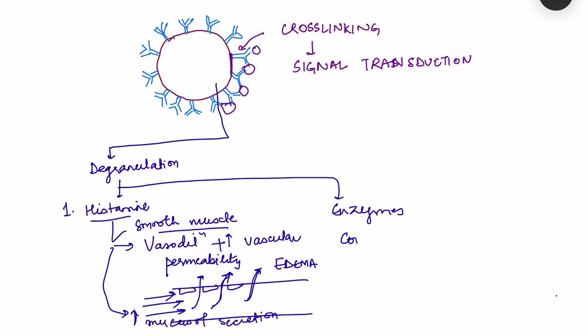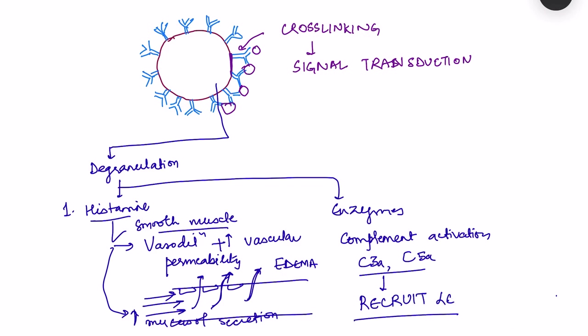Other important granule contents are enzymes responsible for tissue damage, which also lead to complement activation. This complement activation generates subproducts such as C3a and C5a, which are chemotactic and recruit other leukocytes to the site of antigen exposure. IL-5 released by TH2 cells also recruits eosinophils to the site of exposure.